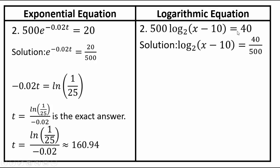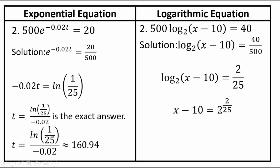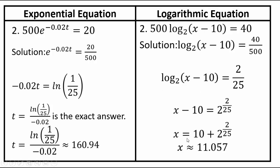For the second problem, divide both sides again by 500, giving 40 over 500. Reducing gives 2/25. Now create the equivalent exponential form: x minus 10 equals 2 to the power 2 over 25, then add 10 to both sides. So the solution is x equals 10 plus 2 to the power 2/25. Always go back and plug it in to make sure it works. The approximate answer is 11.057, but 10 plus 2 to the power 2/25 is the exact solution.